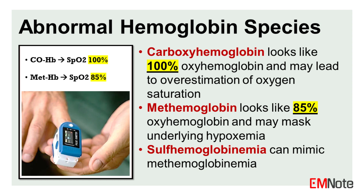One such situation is carbon monoxide poisoning. Carboxyhemoglobin, formed by the binding of carbon monoxide to hemoglobin, has a similar absorption spectrum to oxyhemoglobin. Since oximeters misinterpret carboxyhemoglobin as 100% oxyhemoglobin, SpO2 will trend toward 100% in patients with significant carbon monoxide poisoning, potentially masking the severity of their condition. This can lead to a false sense of reassurance and delayed treatment.